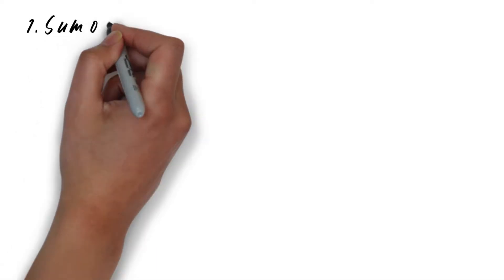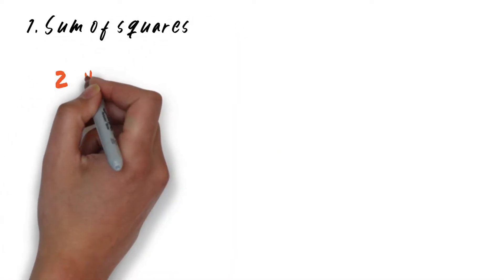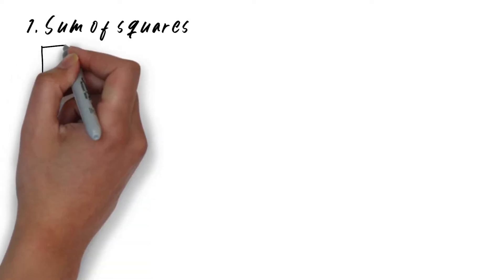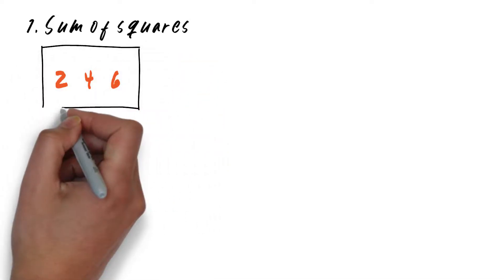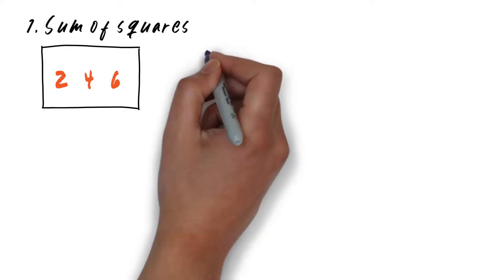Let's start with sum of squares. We are going to use a very simple data set today consisting of 2, 4 and 6. Mean of this data set is 4.